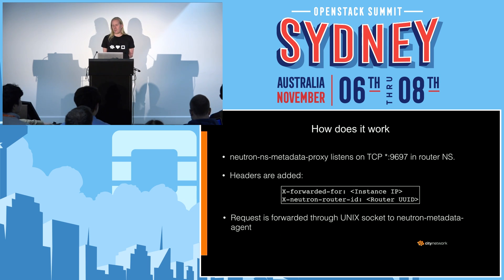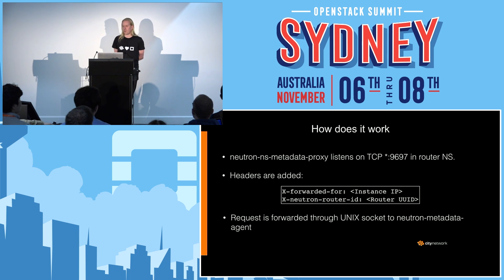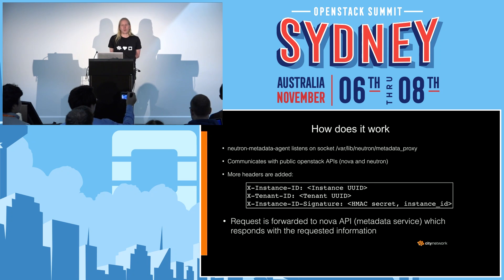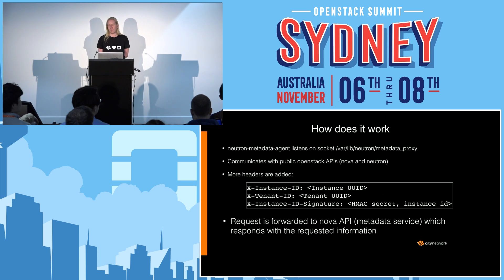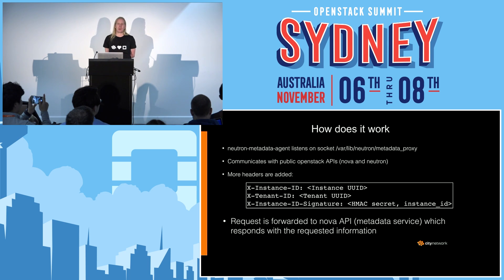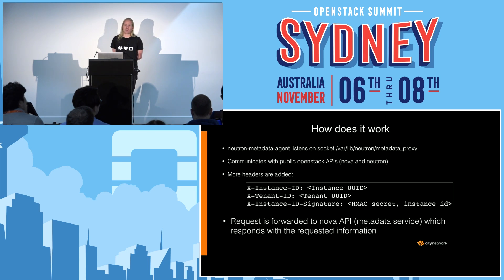The request is then forwarded through a Unix socket to the Neutron Metadata Agent. The Neutron Metadata Agent is running on the network node, not inside the namespace anymore. It listens on the socket, which is normally at var/lib/neutron/metadata-proxy by default. It will communicate with the public OpenStack APIs to find out more information — it will primarily talk to Nova and Neutron.